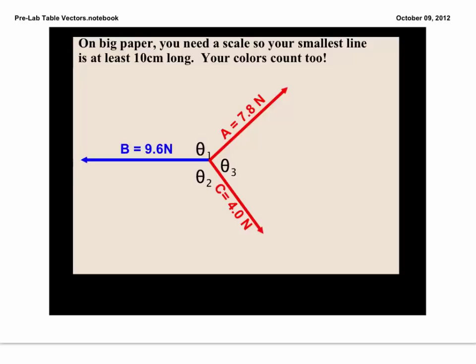What we need to do, the only rule, is that the shortest or smallest force needs to be at least 10 centimeters long. So over here we have a 4 newton vector. This vector down here, vector C, needs to be at least 10 centimeters long. It's going to be up to you to figure out what scale you're going to need to make sure that you can get that vector to be at least 10 centimeters long.